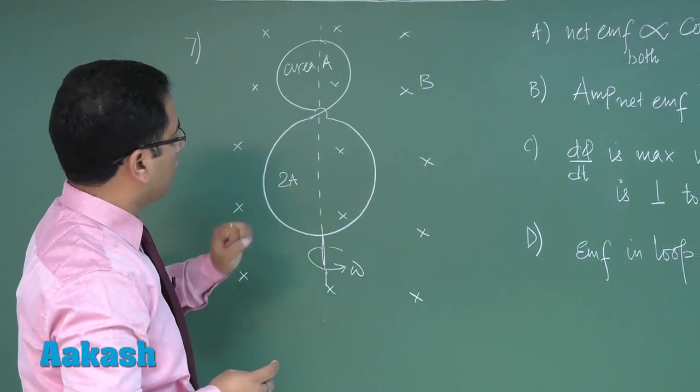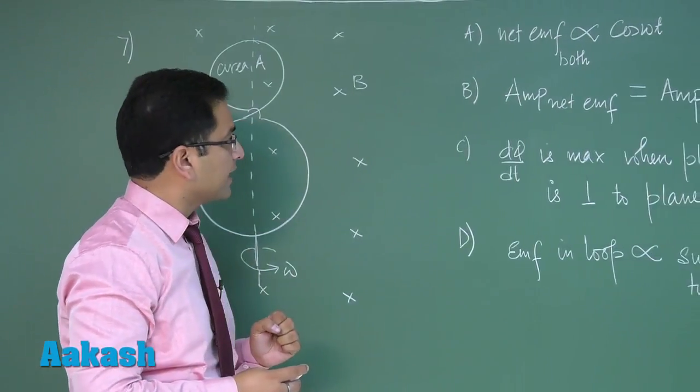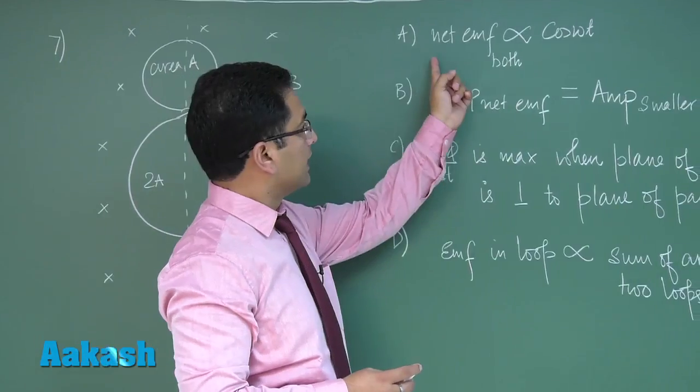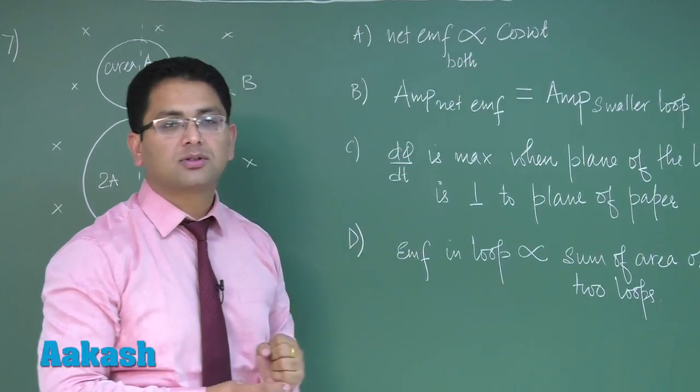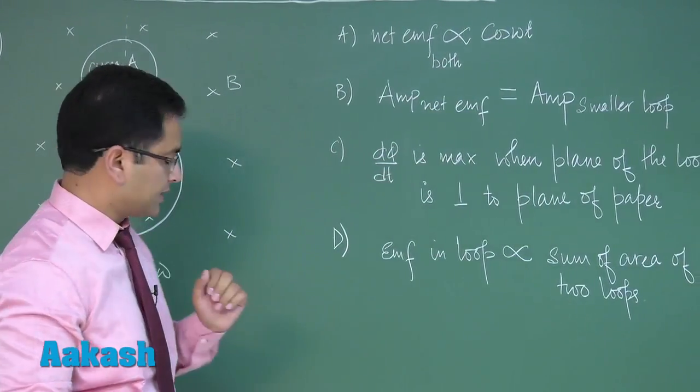On the basis of this particular fact, we need to solve: net EMF on both is directly proportional to cos omega t. Let's try to see.